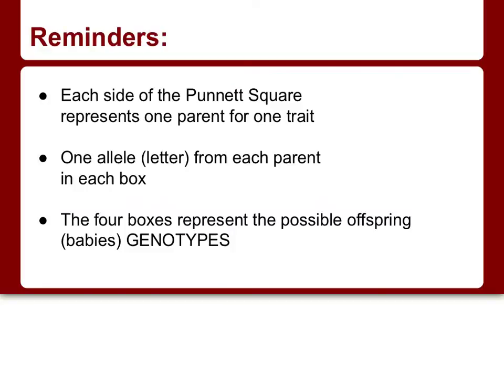A couple things to keep in mind before we begin. Each side of the Punnett square represents one parent for the particular trait. Each letter represents one allele from each parent, and the four boxes in a Punnett square represent the possible offspring genotypes. It's important to remember that these genotypes are just frequencies or ratios of the expected results — not necessarily what we will always observe.